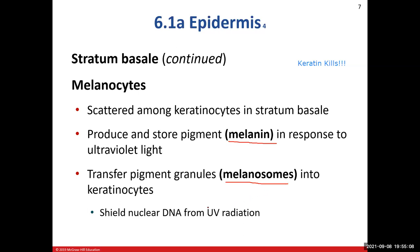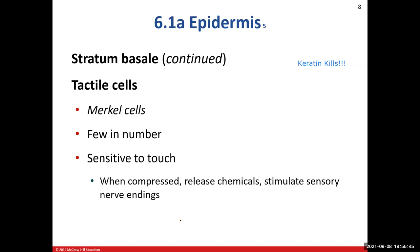Melanin helps to shield the nucleus from ultraviolet radiation by forming almost a coating around the nucleus — because inside is the DNA. UV radiation striking the DNA can cause dimerization, which basically splits the DNA, and that's a bad thing when we're trying to make proteins or replicate cells. So melanin helps to protect against that.